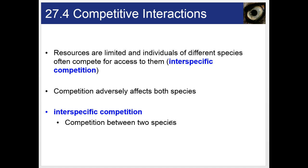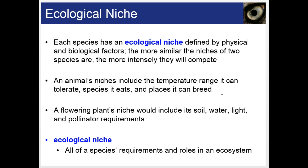There are also competitive interactions in a community. Interspecific competition is competition for resources between different species, and it adversely affects both species. Each species has an ecological niche — defined by physical and biological factors. The more similar the niches of two species are, the more intensely they'll compete. An animal's niche includes the temperature range it can tolerate, the species it eats, and the places it can breed. A flowering plant's niche includes its soil, water, light, and pollinator requirements.